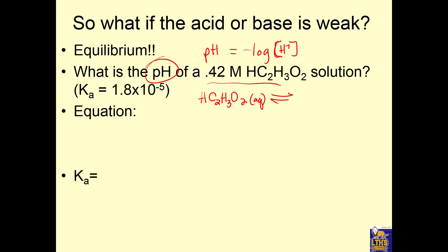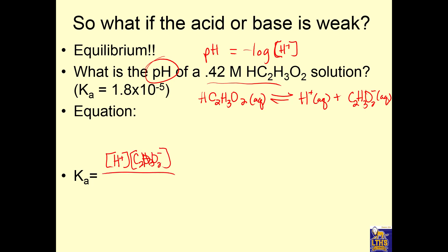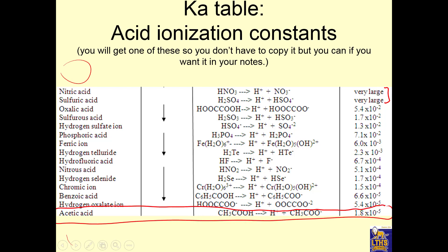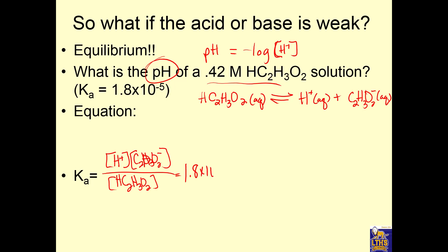The Ka expression is: hydrogen ion concentration times acetate ion concentration C₂H₃O₂⁻, over HC₂H₃O₂. How do you know if it's strong or weak? We memorize the strong acids, but we also have access to the Ka table. The strong acids have very large Ka's, and everybody else is considered weak. Here's acetic acid — Ka is 1.8 times 10 to the negative 5.